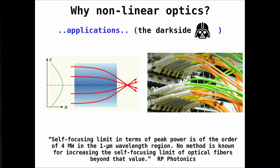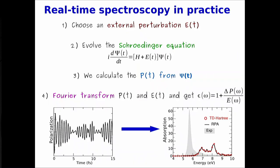Now, how do we calculate nonlinear response in the code? We choose an external perturbation, propagate the Schrödinger equation — actually an effective Schrödinger equation — in time, calculate the polarization, and from the Fourier transform of the polarization we can extract both linear and all nonlinear responses.